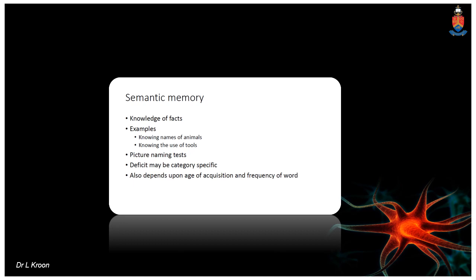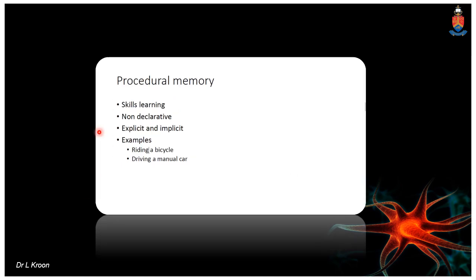Semantic memory governs knowledge of facts — for example, naming specific animals or picture naming tests. A deficit may be specific to a particular category, so you must test different categories to assess semantic memory loss. Procedural memory is non-declarative, meaning the person does not have to actively recall it. It is tested by seeing whether a person can still ride a bicycle or drive a manual car.